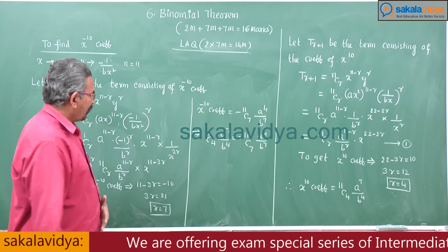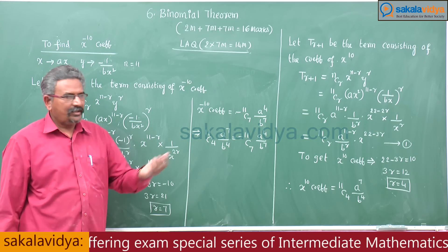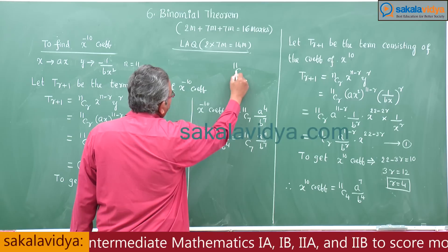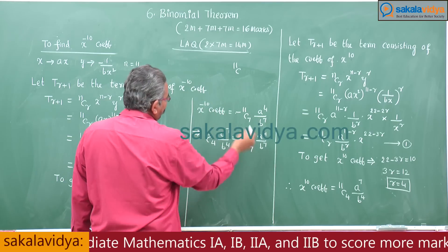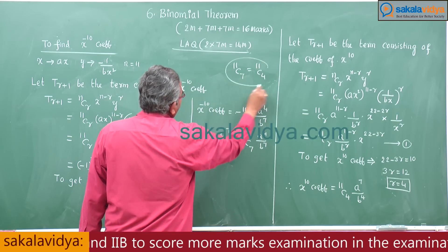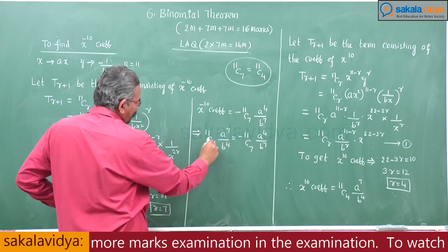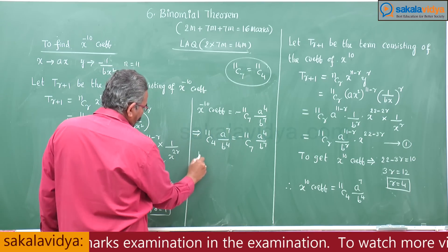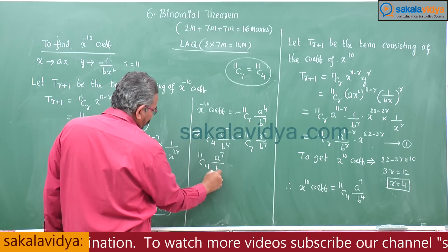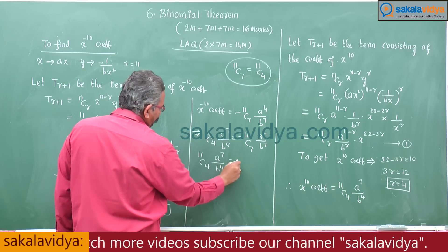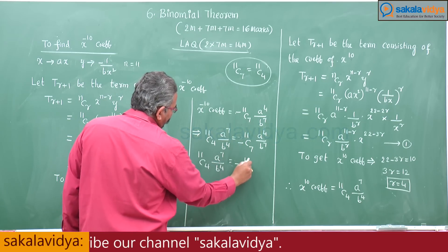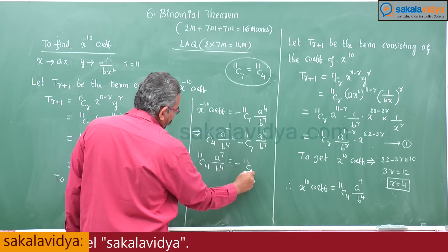By properties of combinations, 11C4 = 11C7, so both sides have the same combinatorial factor. We can write: 11C4 · A^7/B^4 = -11C4 · A^4/B^7, which gives us the relation between A and B.